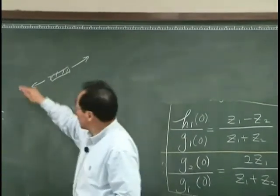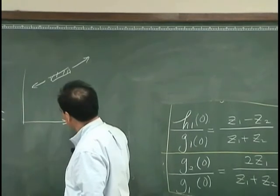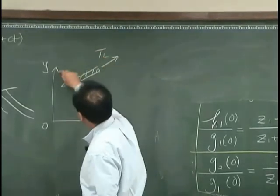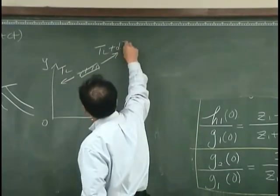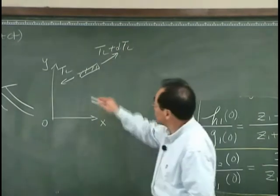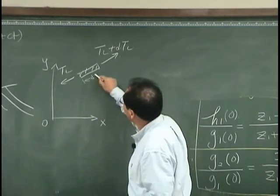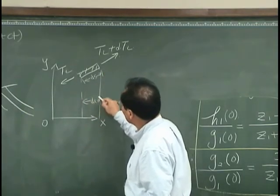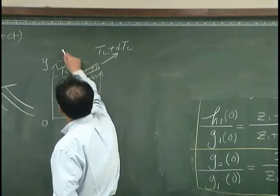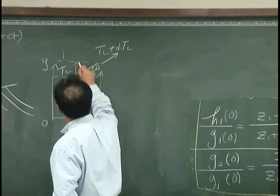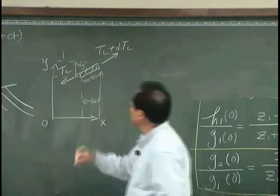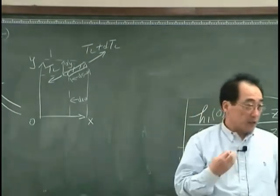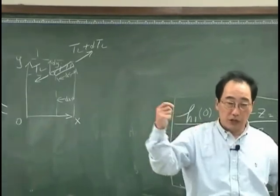So I will show you how we can get those expressions. This is a small string measured by these two coordinates, and this tension. And one could say there is some tension variation, and this is a small distance. And I would say this is dx, and this is dy. And assuming that the gravity effect is small compared with the tension effect.